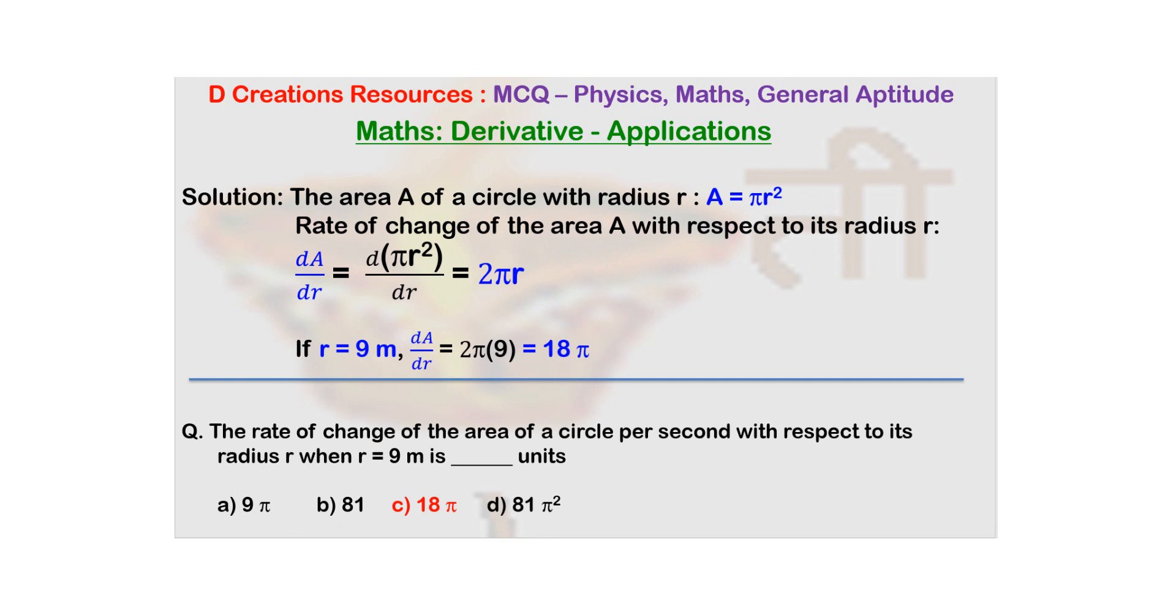So dA/dr where A is basically πr², the area. It's a simple derivative: dA/dr is just 2πr, because r² becomes 2r and you multiply by π. So the answer here is 2πr units.